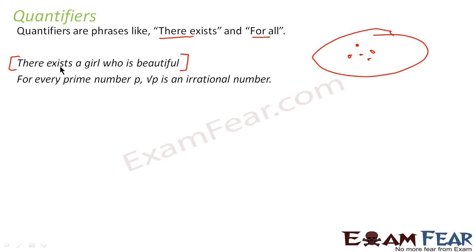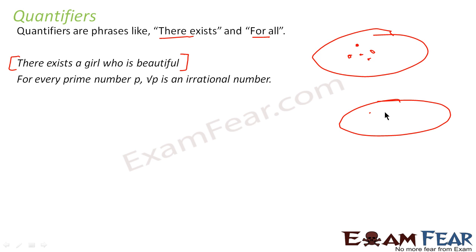When you say 'for every,' that means — for example, for every prime number p, root p is an irrational number. So you take any prime number, take the root of it, it becomes irrational. 'For every' is used when the statement is true for all the elements in the set. If your statement is true only for some elements, you say 'there exists.' But if your statement is true for all the elements in the set, then you use 'for every.'